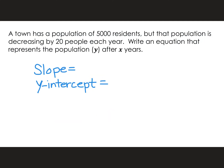A town has a population of 5,000 residents, but that population is decreasing by 20 people each year. Write an equation that represents the population y after x years. What's my slope — what's happening over and over again? The population is decreasing by 20 people each year. But what does decreasing by 20 look like as a number? Well, if you said minus 20, you are correct. And then the town has a population of 5,000 residents — that was our starting point, so that's our y-intercept. I would write it: y equals negative 20x plus 5,000.